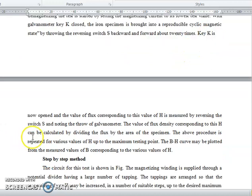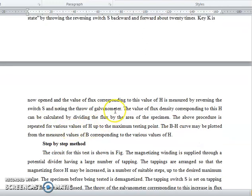Key K is now opened and the value of flux corresponding to this value of H is measured by reversing the switch S, noting the throw on the galvanometer. The value of flux density corresponding to this H can be calculated by dividing the flux by the area of the specimen.